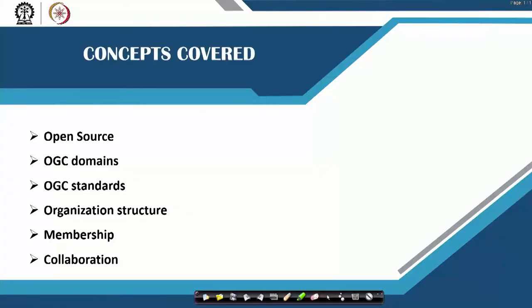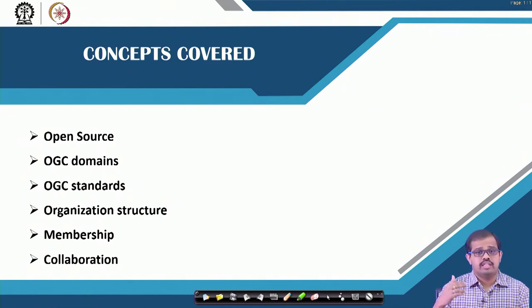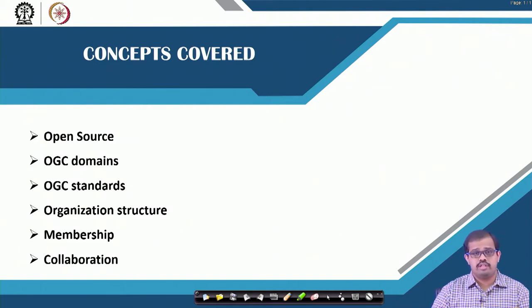In this first lecture, let us learn about what you actually mean by open source software. I will cover what open source means, the different domains such as the Open Geospatial Consortium, what the standards in open source are, the organization structure, and membership and collaboration.